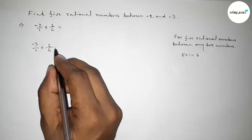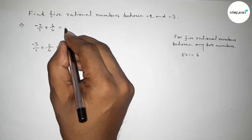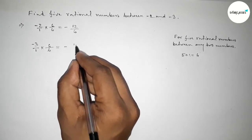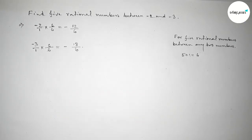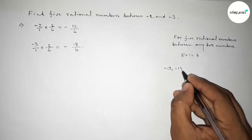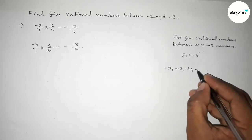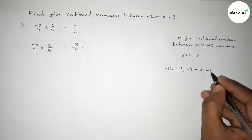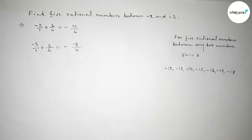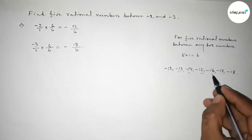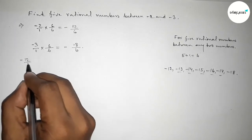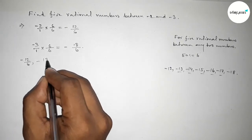So this gives us minus 12 over 6 and minus 18 over 6. Now between minus 12 and minus 18 we can get five negative integers. So first write down all the negative integers here. These are the required five negative integers.